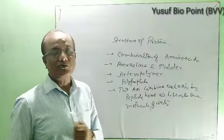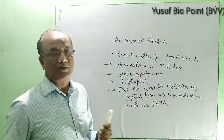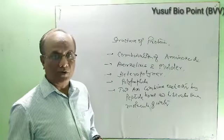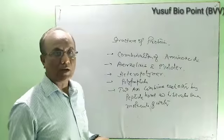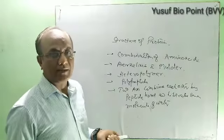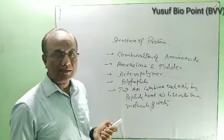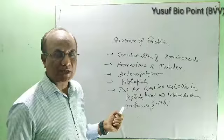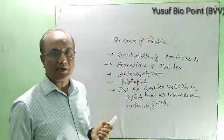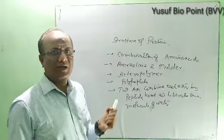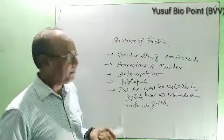We know about 20 types of amino acids, such as alanine, glutamine, glycine, methionine, aspartic acid, glutamic acid, and many more.